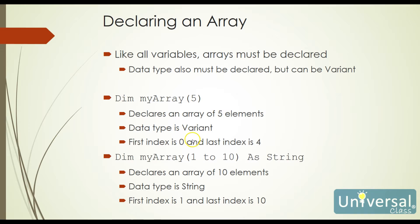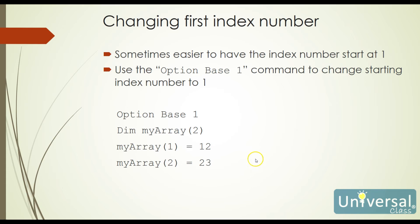We can also specify our arrays differently. We dimension an array called myarray and specify that our elements are going to be numbered 1 to 10. This forces the first element's index to be 1 instead of 0, and we also specify it as a string. So this declares an array that has 10 elements, the data type is string, the first element's index is 1, and the highest element's index is 10. We can then reference our array as myarray(1) all the way up through myarray(10).